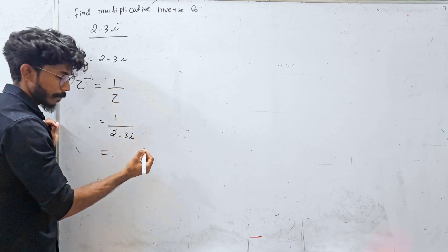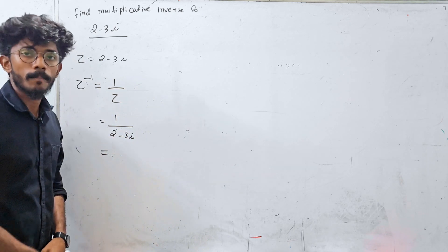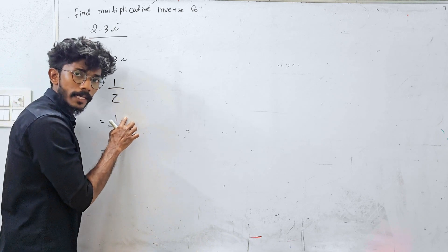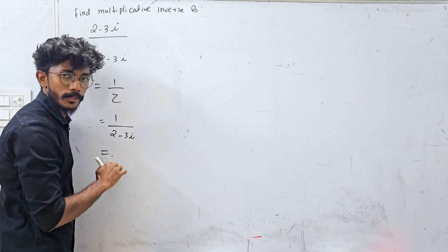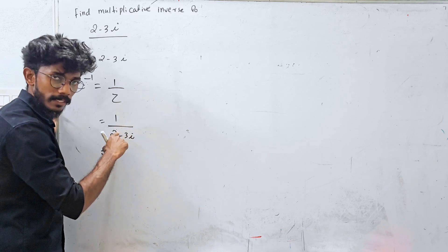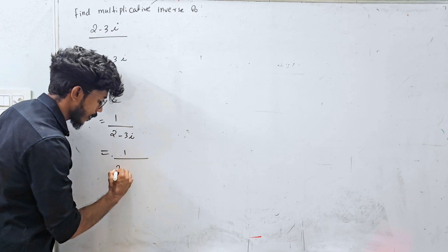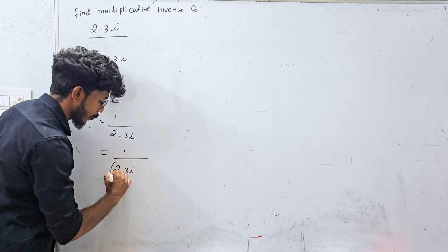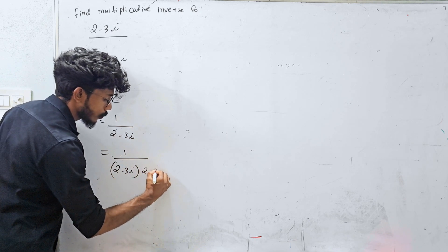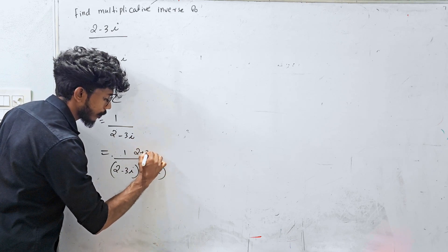I will teach you: if you have a complex number, multiply numerator and denominator by the conjugate. If z equals 2 plus 3i, then 1 by z is 1 divided by 2 plus 3i. The conjugate of 2 plus 3i is 2 minus 3i, so that is the multiplicative inverse setup.